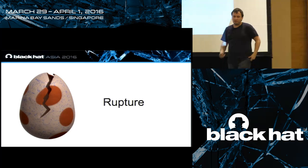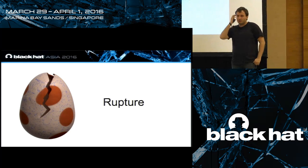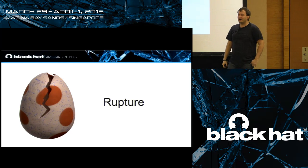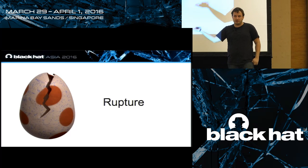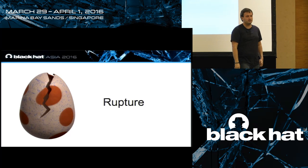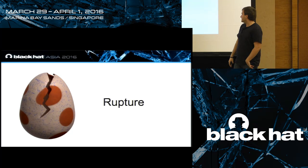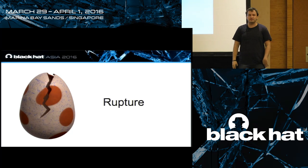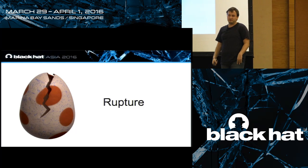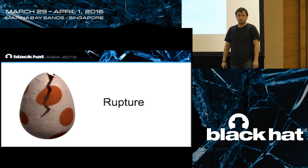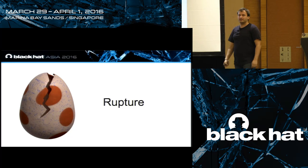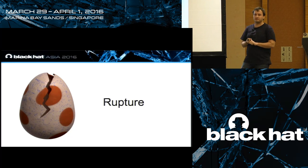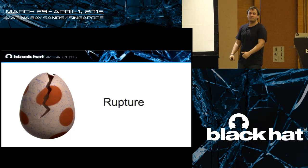Today is an important moment for our team - this has been months of work. Rupture is what we call our implementation of these ideas. It implements all our optimization techniques and all our statistical techniques. It's not a proof of concept - it's complete, ready code you can run on real systems. We are making it open source right here in Singapore at Black Hat Asia, and we invite you to download it, modify it, play with it, try it on your own website, and explore different targets.